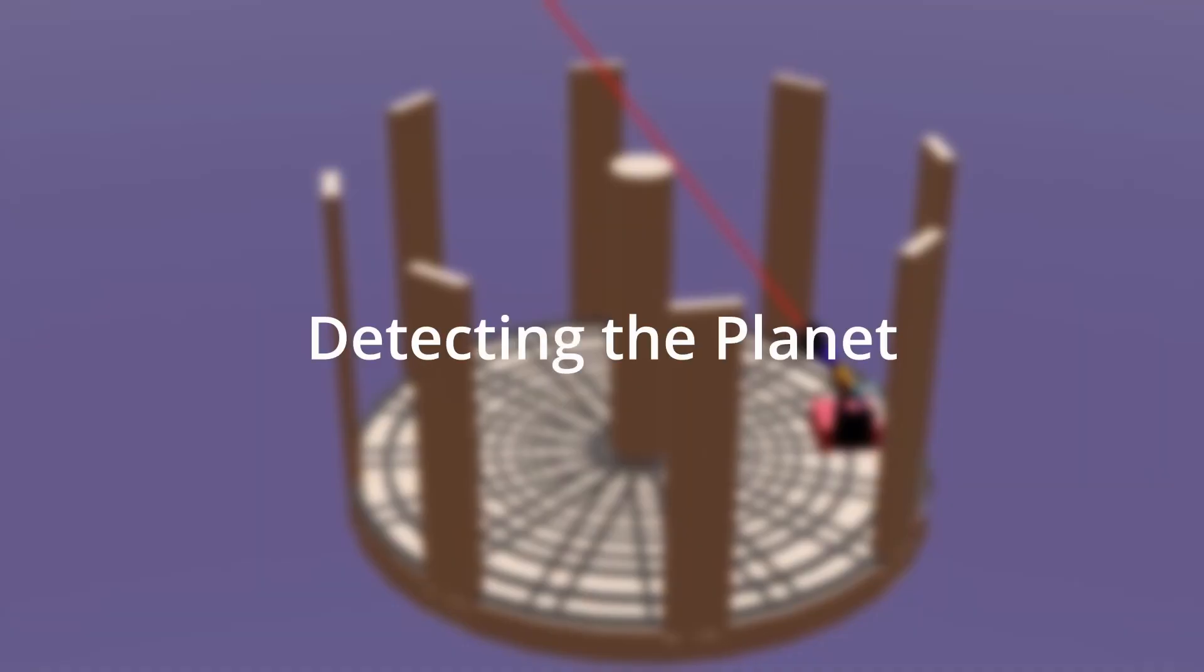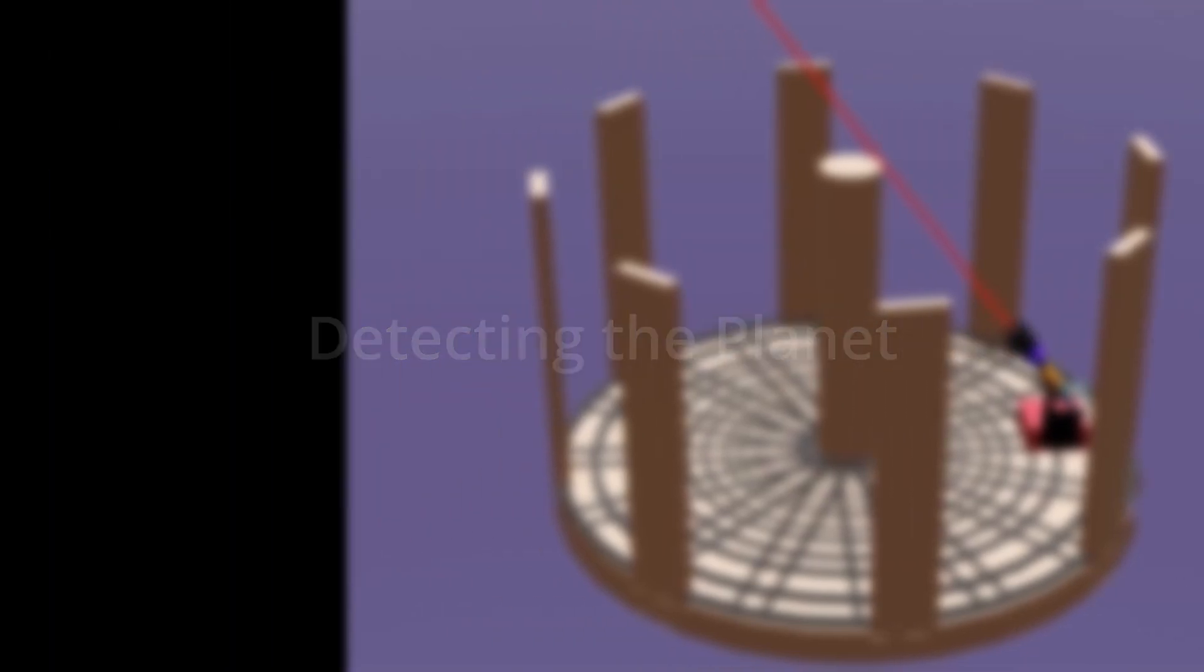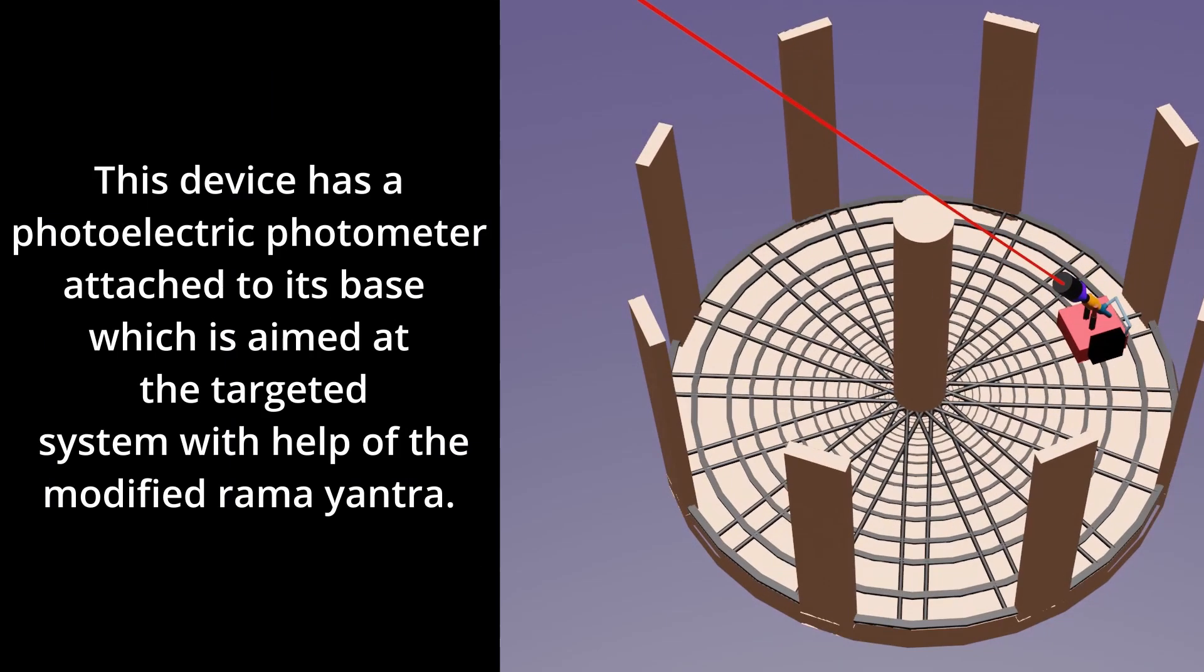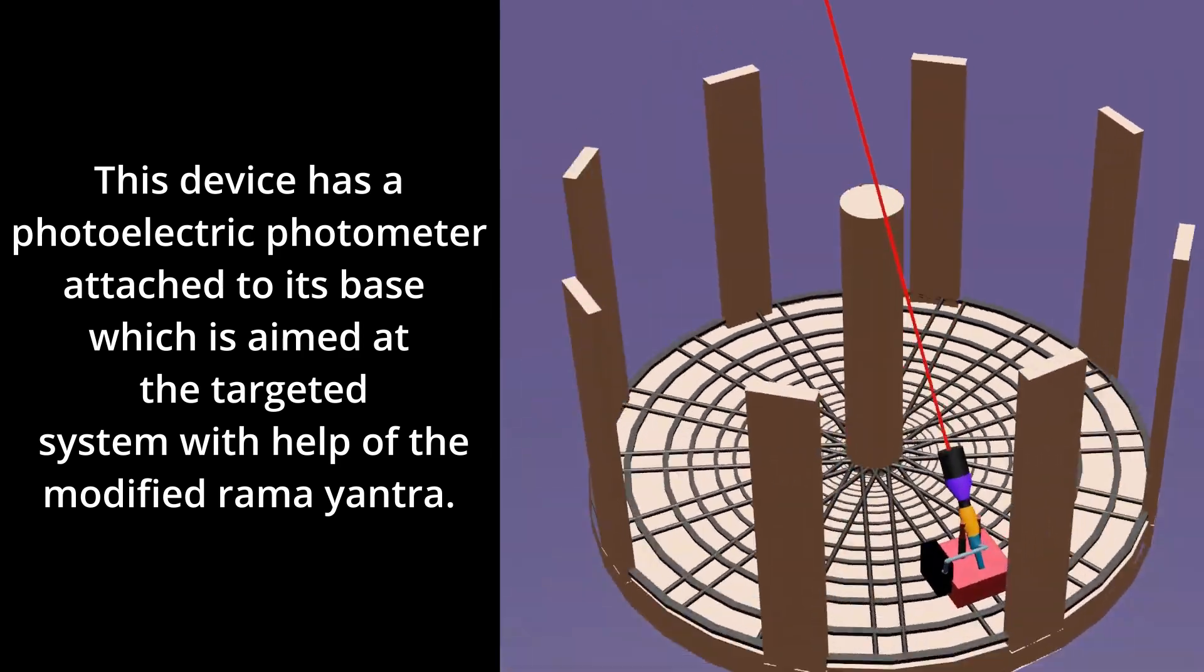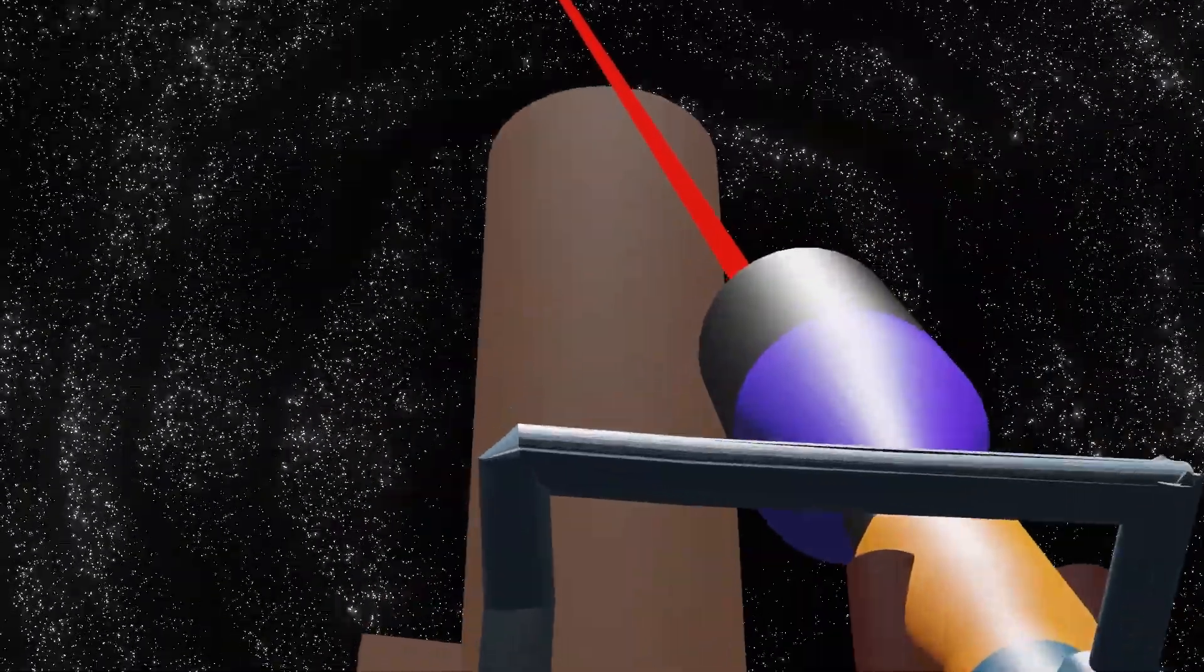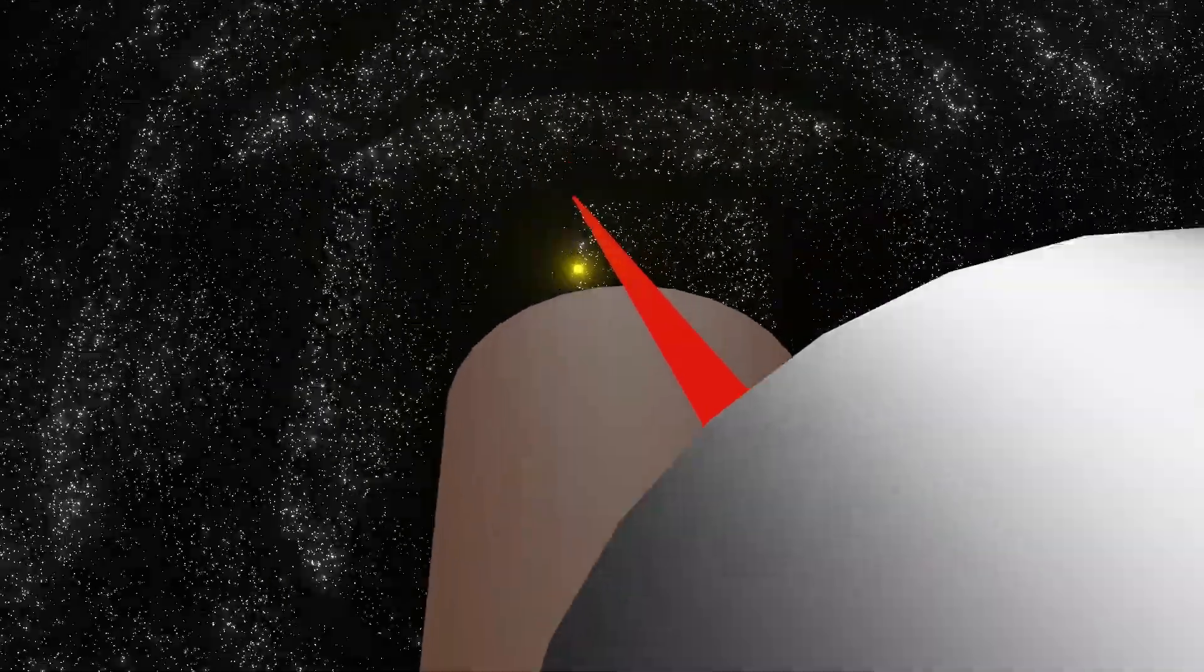The following animation shows how the Ramayantra Planet Locator will be able to confirm the existence of the predicted planet by first aiming its photoelectric photometer at it with help of the Ramayantra and then observing the dip in its brightness.